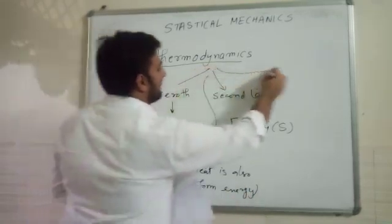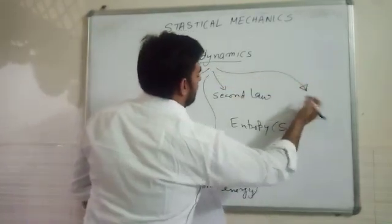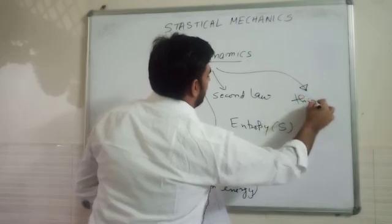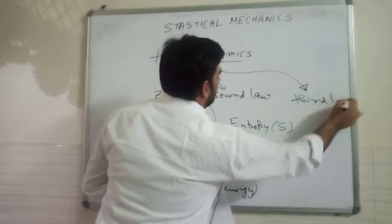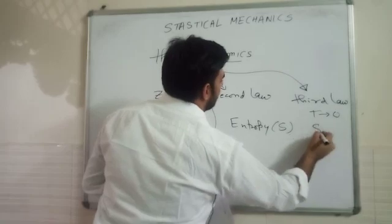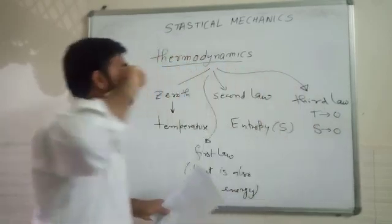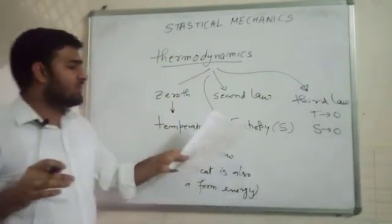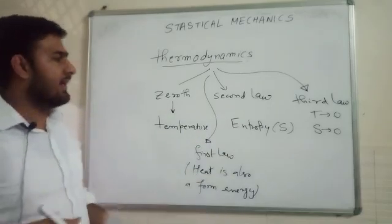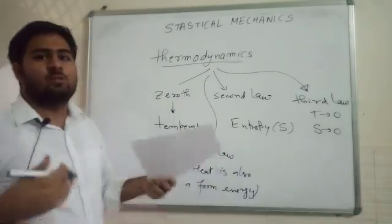And the third law tells that as temperature tends to zero, the entropy of a system also tends to zero. So all these four laws, we can use them and predict what a thermodynamic system will do.